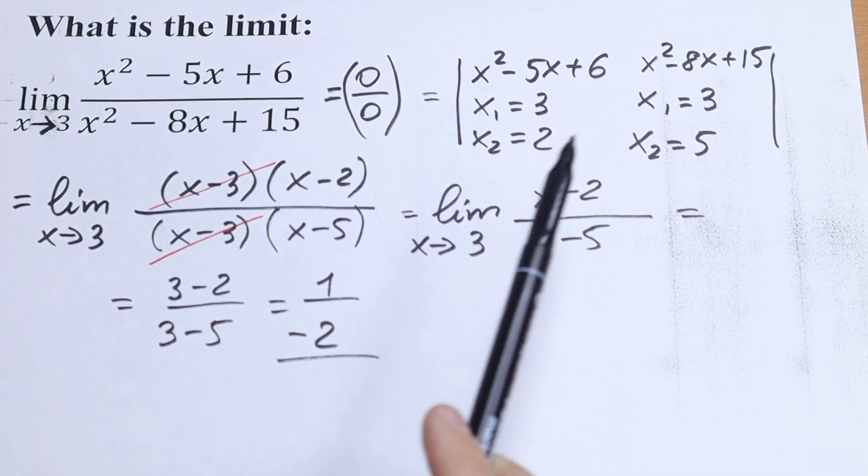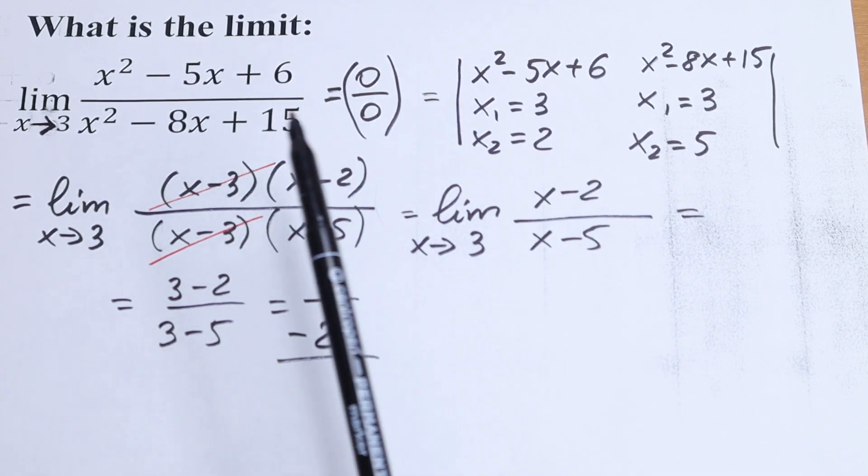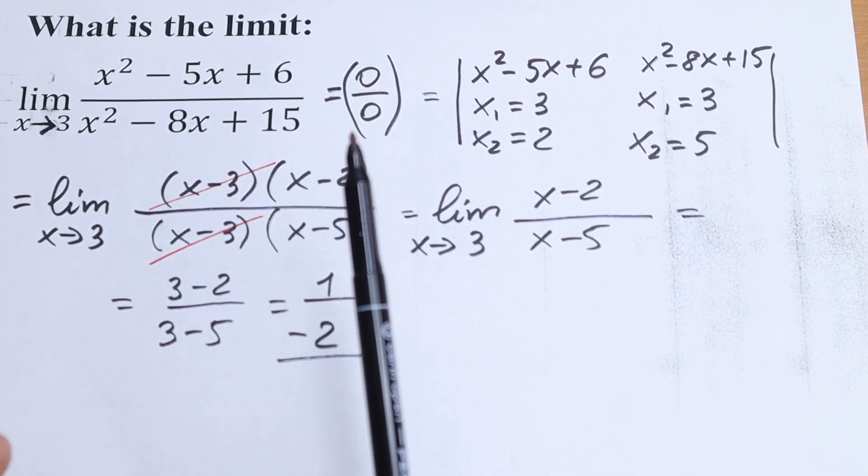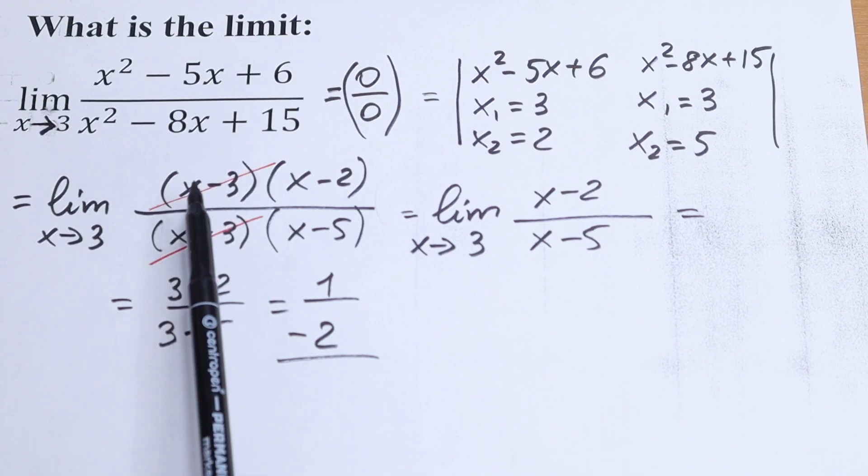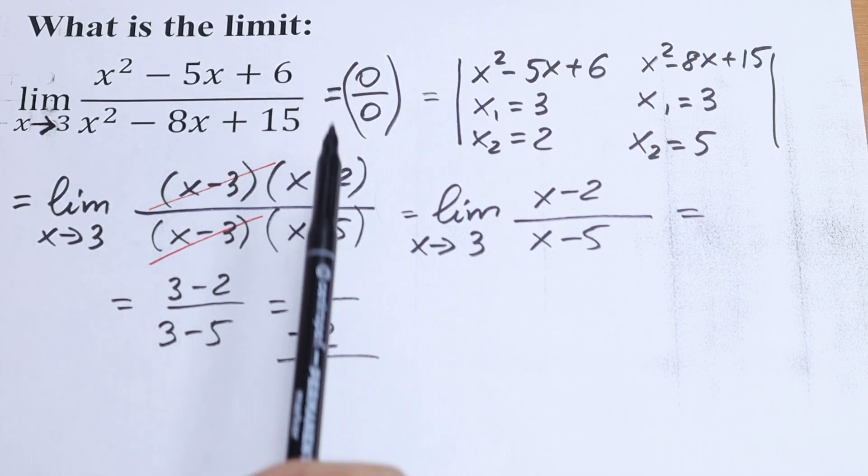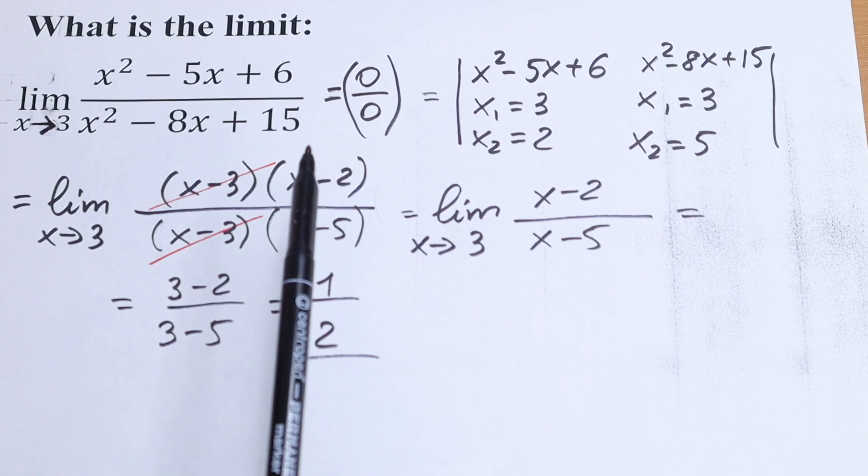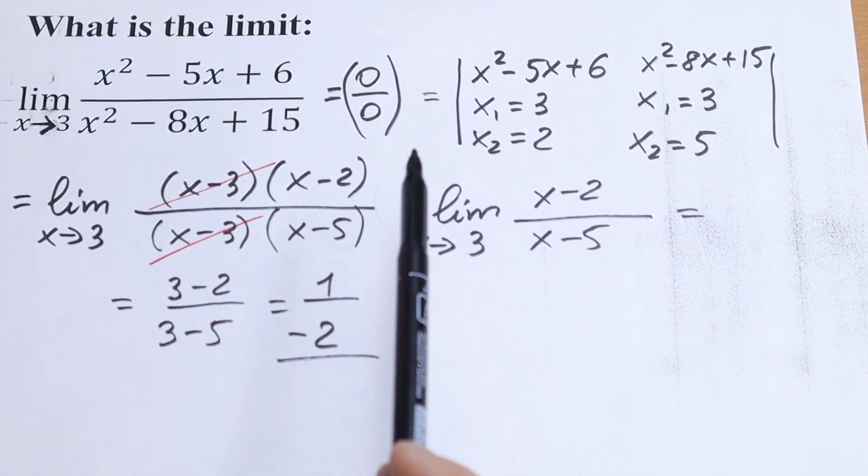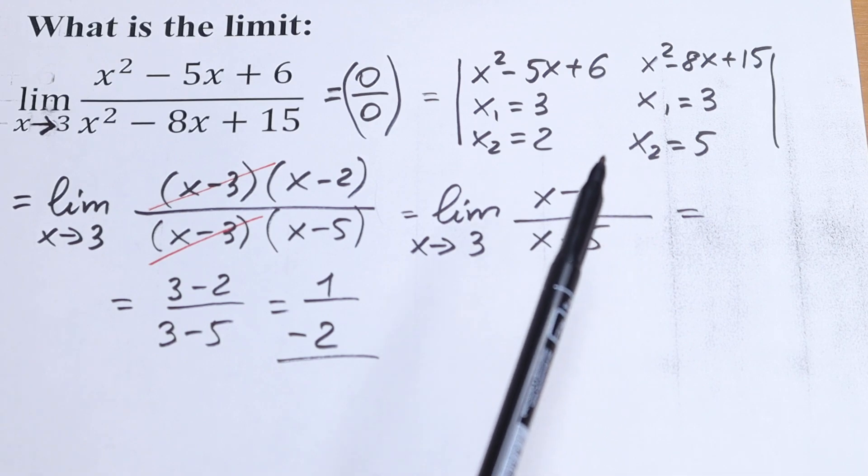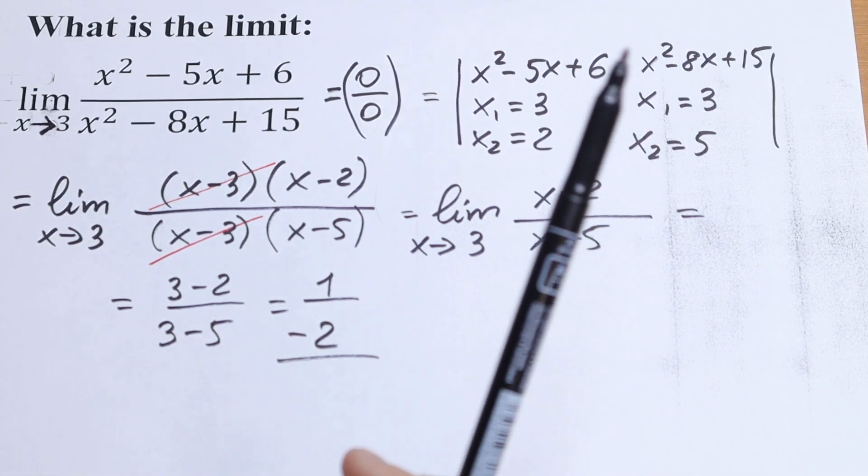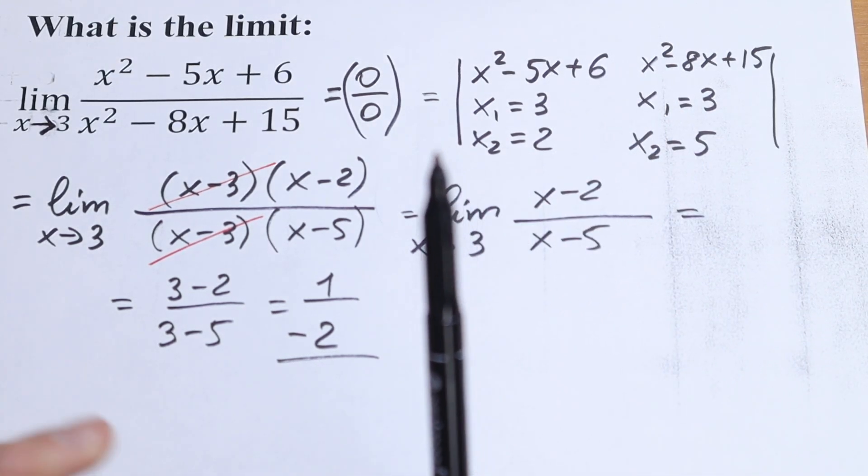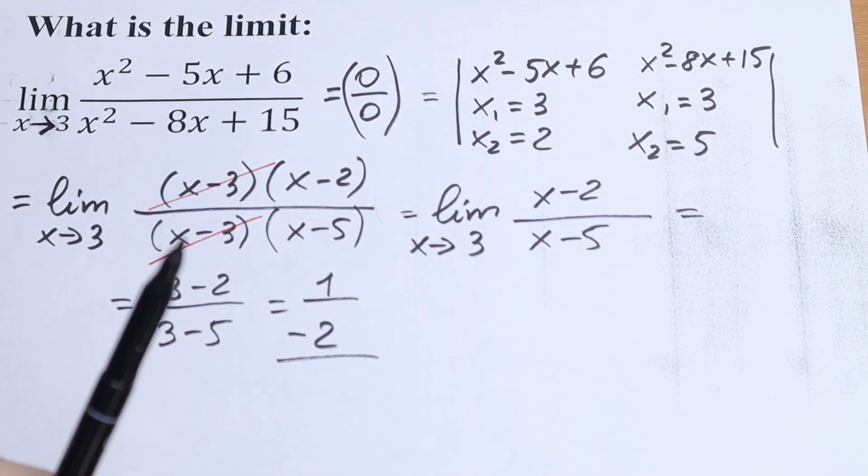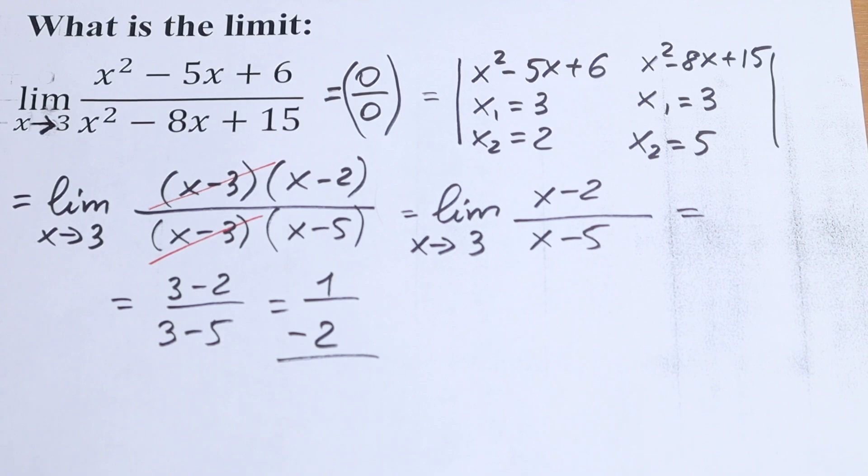If you agree with this answer, if you disagree, maybe you have a faster method of how to solve this, I think that this solution is good. Just factor out these expressions that give us undefined 0 over 0 and cancel it, and we will have our limit. Subscribe for more videos, I really appreciate it. If you need more high mathematics, limits, integrals, matrix and more and more and more. Thank you so much for watching and see you in the next videos.